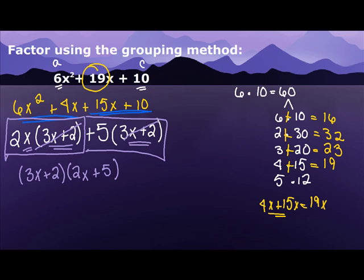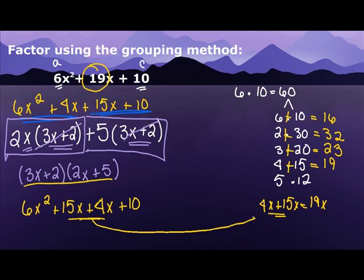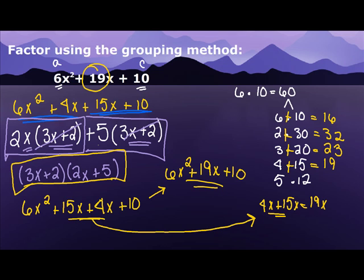But let's check it just to make sure we're right. Just to be clear, this is my answer. And right now we're just going to check it. So I'm going to FOIL 3x times 2x is 6x squared. 3x times 5 is 15x. 2 times 2x is 4x. And 2 times 5 is 10. Now do you notice something in here? 15x plus 4x is exactly what we took out to add to 19x. So when we collect like terms, we end up with 6x squared plus 19x plus 10. Yay! So we know that this is 6x squared plus 19x plus 10 factored.